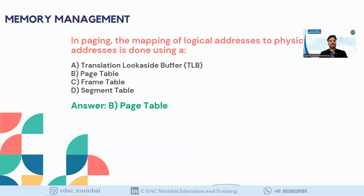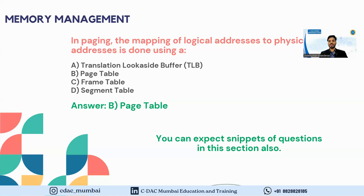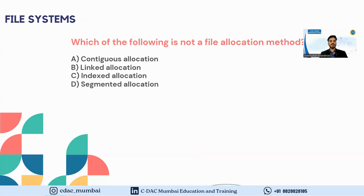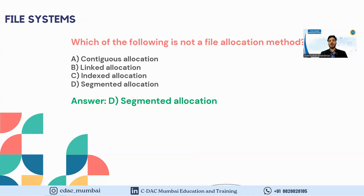You can also expect snippet-based questions in both process management and memory management where you need to write answers on pen and paper. For File Systems, the question is: which of the following is not a file allocation method? The options are contiguous allocation, linked allocation, index allocation, and segmented allocation. The answer is segmented allocation, as it is not a file allocation method.